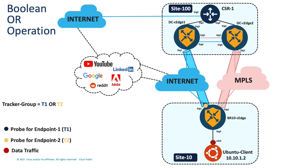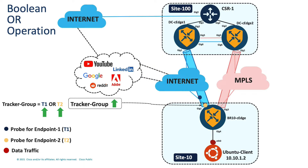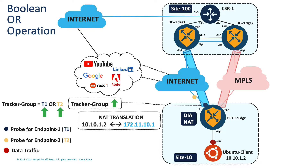Let's move on to the boolean OR operation. Again, here we have two probes — blue and yellow — tracking their respective endpoints. Since the router is receiving replies for the probes it sends, the tracker status of T1 and T2 remains up, resulting in the tracker group status remaining up as well, and data traffic gets forwarded through the DIA interface Gigabit Ethernet 1. Once again, there is some disruption in the ISP network due to which tracker T1 goes down as the router doesn't receive replies for the blue probes. However, the tracker group status still remains up because for a boolean OR operation, the tracker group will go down only if both trackers go down. Hence, data traffic still goes out through the DIA interface Gigabit Ethernet 1 without any disruption.